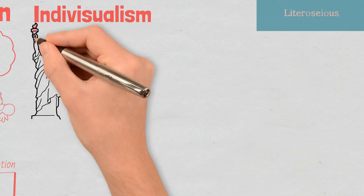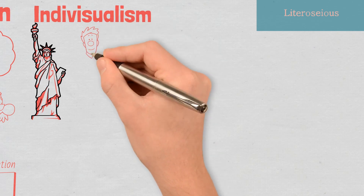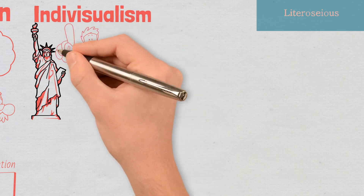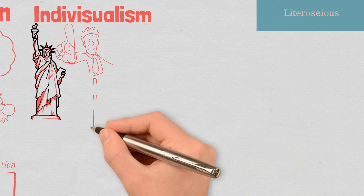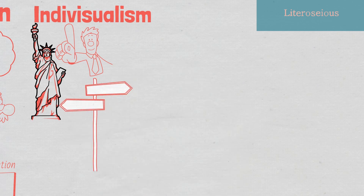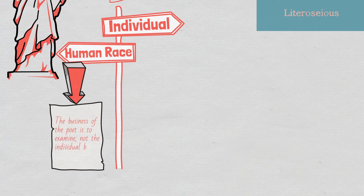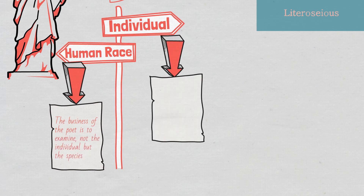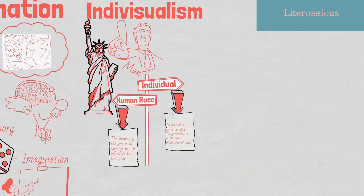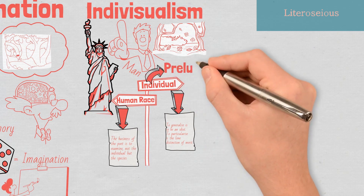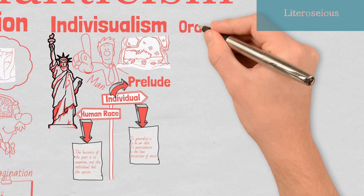Individualism. For Romantics, a man is an autonomous entity, and therefore the business of the poet is to focus not on the human race as a whole, but on the individual. This idea of individualism is totally in opposition to the classical idea of the human race as a whole. While Johnson, a classicist, writes that the business of the poet is to examine not the individual but the species, Blake, a Romantic, writes: 'To generalize is to be an idiot. To particularize is the long distinction of merit.' This is why when Wordsworth attempted to write on the subject of man, nature, and universe, he produced the Prelude, an autobiographical poem, instead of something similar to Pope's Essay on Man.